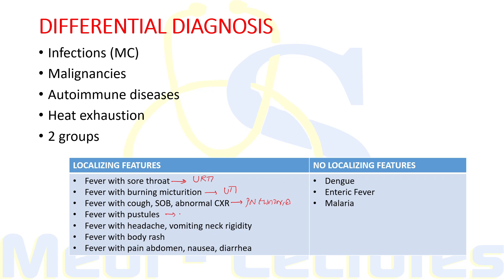Fever with pustules suggests pyoderma as the most likely cause. Fever with headache, vomiting, and neck rigidity requires ruling out meningitis. Fever with body rash can be seen in a variety of conditions but most commonly occurs in viral infections. Fever with pain abdomen, nausea, and diarrhea can be seen with gastrointestinal infection or gastroenteritis.